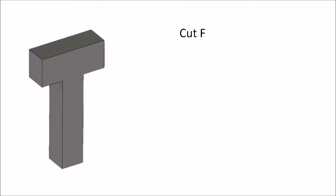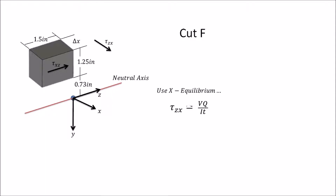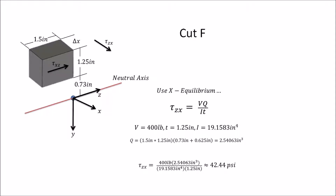Finally, let's look at cut F, down the middle of the flange. Using x-equilibrium and τ = VQ/It, V = 400 pounds, t = 1.25 inches, and I = 19.1583 in⁴. Q is 1.5 × 1.25 × (0.73 + 0.625) inches, giving Q = 2.54063 in³. Plugging in, τ_zx ≈ 42.44 psi.